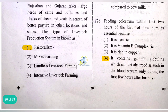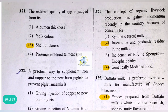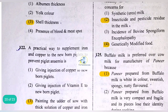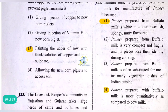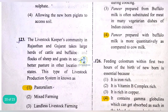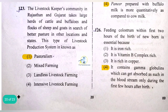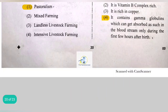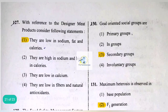If you know these answers, do let me know in the comment section. Feeding colostrum within the first two hours of birth of a newborn is essential because it contains gamma globulins which can be absorbed as such into the bloodstream only during the first few hours after birth.